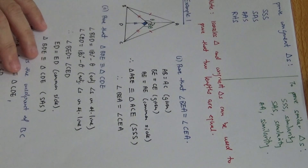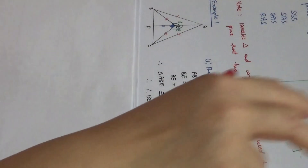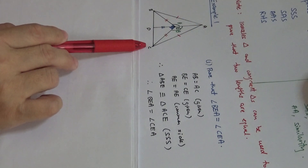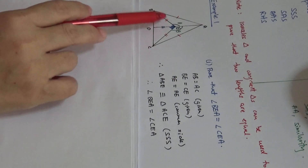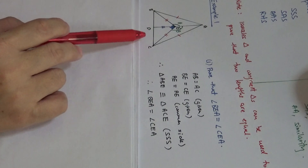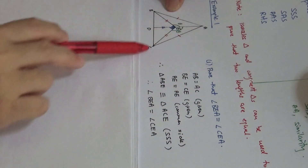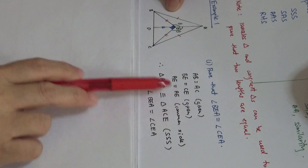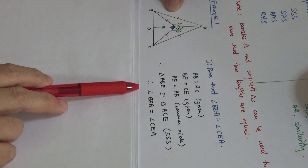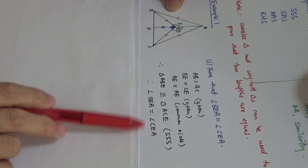Let's move on to Example 1. In the diagram, AED and BDC are straight lines. AB equals AC and BE equals CE. We are supposed to prove that angle BEA equals angle CEA. AB equals AC is given, BE equals CE is given, and AE is a common side. We prove that these two triangles are congruent because of the three-side SSS. Therefore, we can conclude that angle BEA equals angle CEA. In this part, we use congruent triangles to prove that two angles are the same.